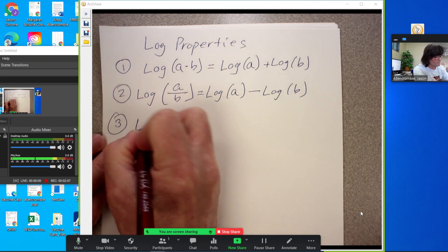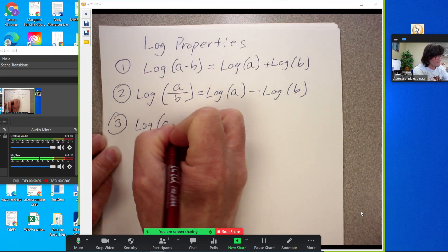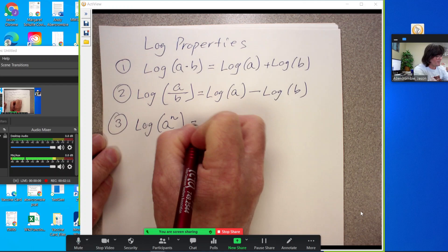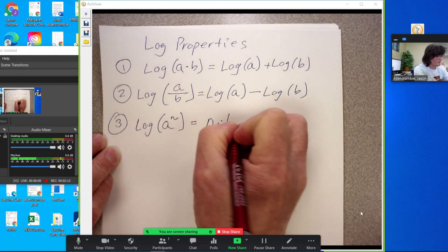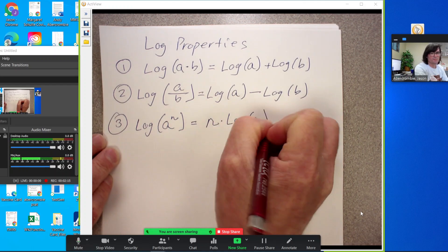The final one is with exponents. If you have log of a to an exponent of n, that exponent can come down as a coefficient just like that.